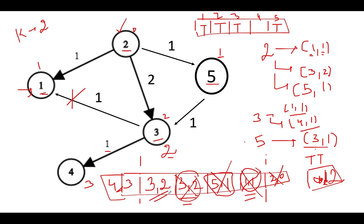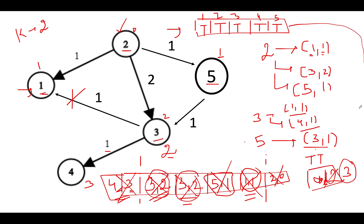The next element in the queue is (3,2) again — since node three is already visited, we skip it entirely. Finally, (4,3) is pulled out. Total time is two, and the current cost is three, so we update to the maximum which is three. Node four is marked visited, and there are no more outgoing edges from four. The priority queue is now empty. All five nodes have been visited and the total time is three.